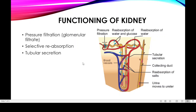How does pressure filtration work? In the glomerulus, there is a network of capillaries through which blood flows at high pressure. This high blood pressure causes pressure filtration. Just like when you open a tap fully, the water flows with great force — similarly, the blood under high pressure in the glomerulus causes filtration.